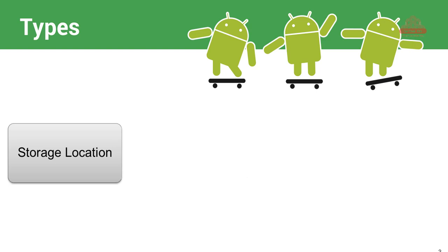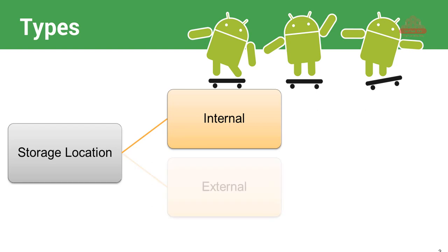जब भी आप storage को store करते हो, तो यहाँ पे आपको उसका location important है. Android के अंदर जब भी आप कुछ store करते हो, तो वहाँ पे दो तरीका होता है. पहला तरीका उसको हम internal storage कहते हैं, और दूसरा तरीका जिसको हम external storage कहते हैं. आप internal memory में store कर सकते हो, या external में store कर सकते हो.